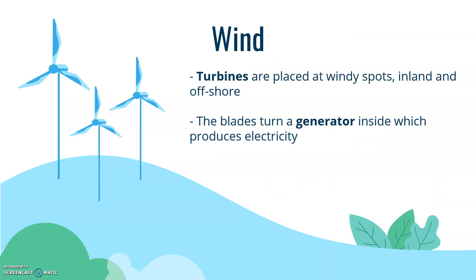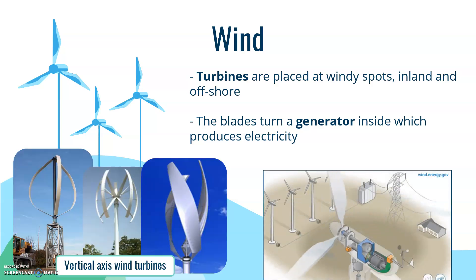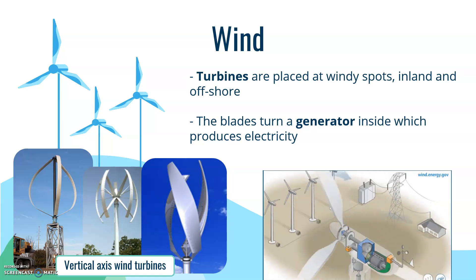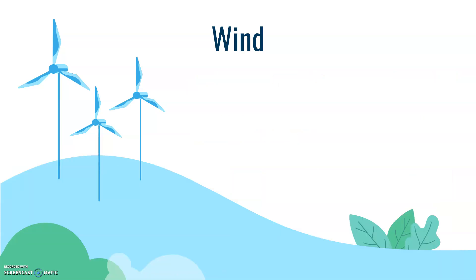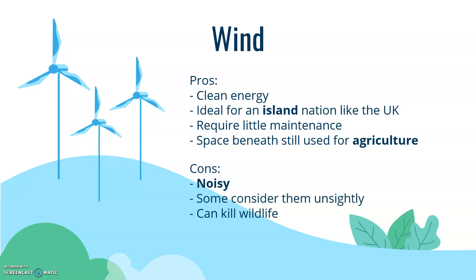The first renewable is wind power. Turbines are placed in windy spots — not just on land but also offshore — and the blades turn a generator inside, producing electricity. There are other types of wind turbines, not just the horizontal axis but also vertical axis wind turbines. The positives: it's clean energy, really well-suited for a windy island nation like the UK.